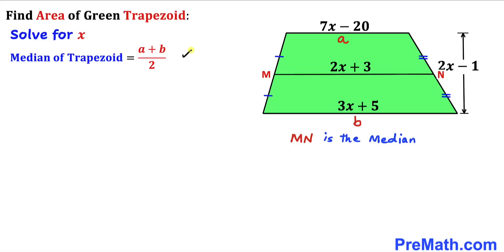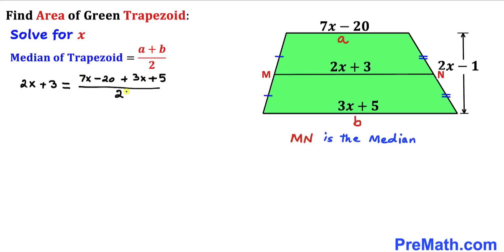Let's fill in the formula. The median mn is 2x plus 3, which equals the sum of base a (7x minus 20) and base b (3x plus 5), all divided by 2. Combining like terms in the numerator gives us 10x minus 15, divided by 2.